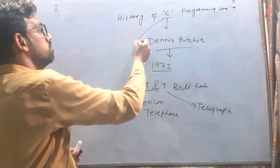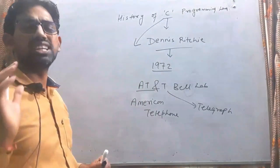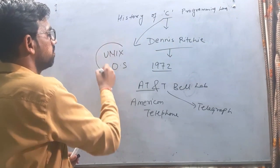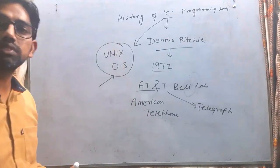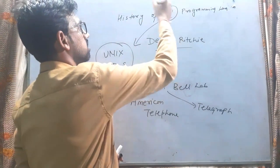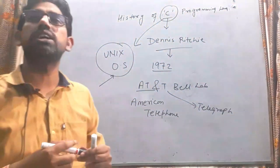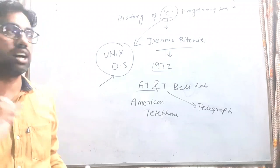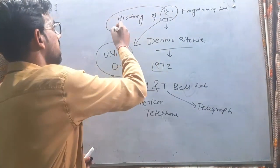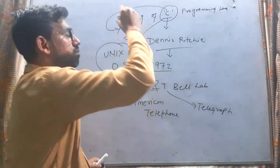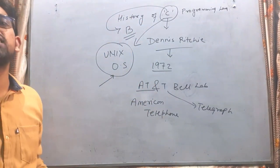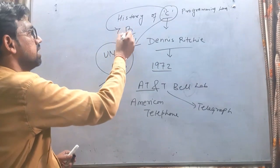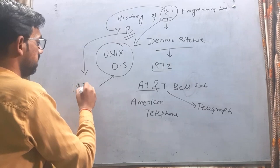C programming language बनाने का जो aim था, जो reason और उद्देश्य था, वो था Unix operating system को fully develop करना। अब students यह पूछते हैं कि सर, C तो एक alphabet हो गया तो D होगा, B होगा, A होगा। C से पहले एक और programming language थी जिसका नाम है B programming language। B programming language को 1970 में बनाया गया।